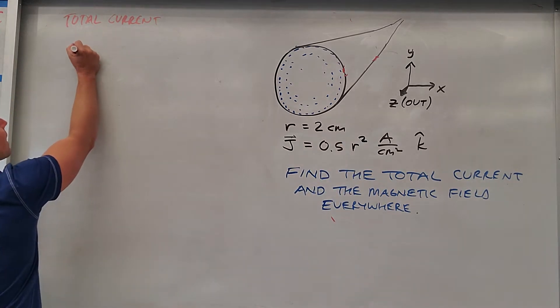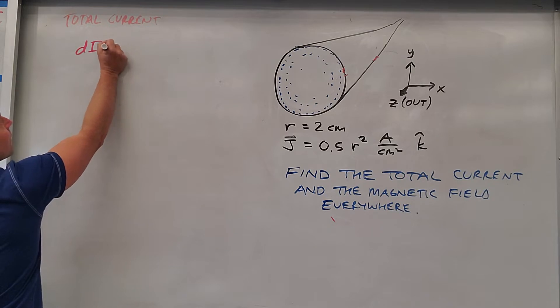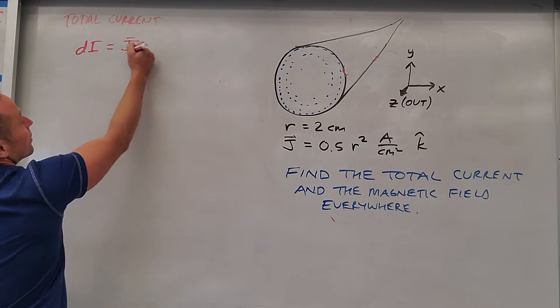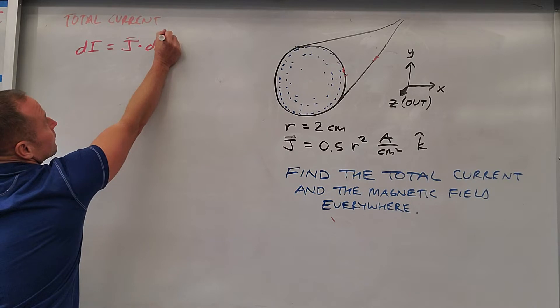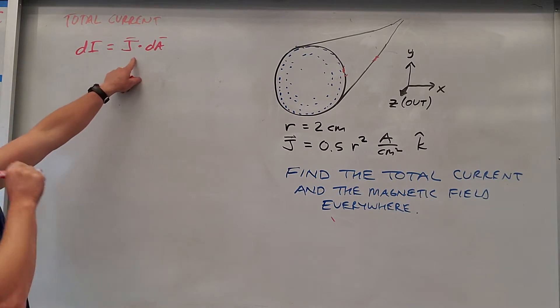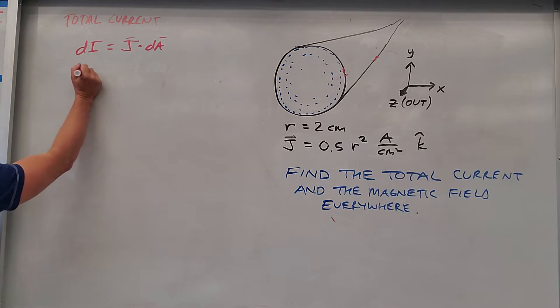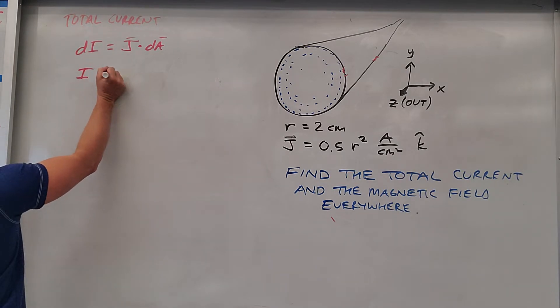So what we can do is say that a little bit of current would be current per area times a little bit of area. And then basically add all those up to get the grand total current. So the total current I would just be the integral of this.